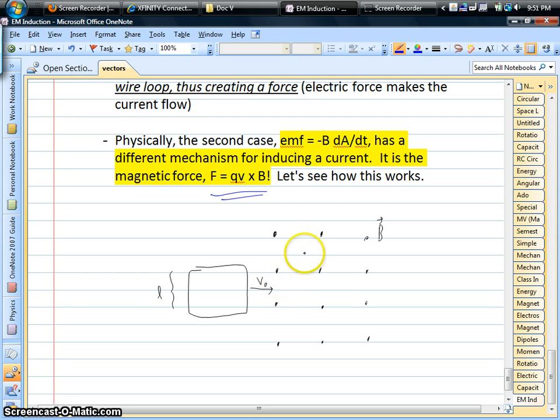But then, if we move that loop forward a little bit, think about what happens when that front edge starts to enter the magnetic field. Now all of a sudden, you have, I'll show you in this region, where you have a region where you have magnetic flux.